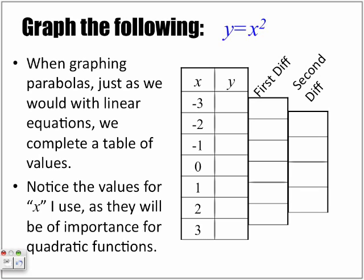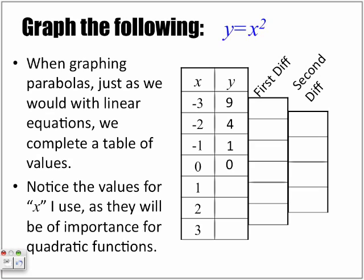Okay, so we're back. Let's look at what you should have in your table of values. Substituting each value of X, when X is negative three, Y is nine. When X is negative two, Y is four. When X is negative one, Y is one. When X is zero, Y is zero. When X is one, Y is one. When X is two, Y is four. And when X is three, Y is nine.